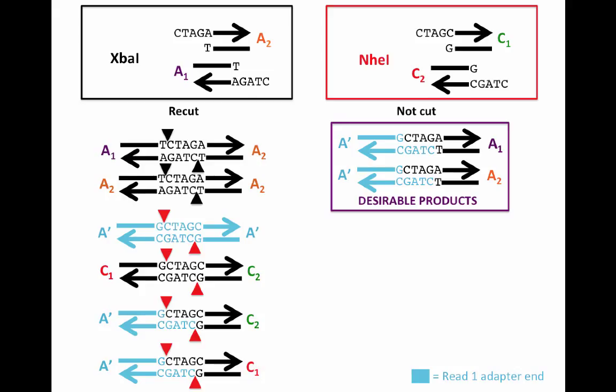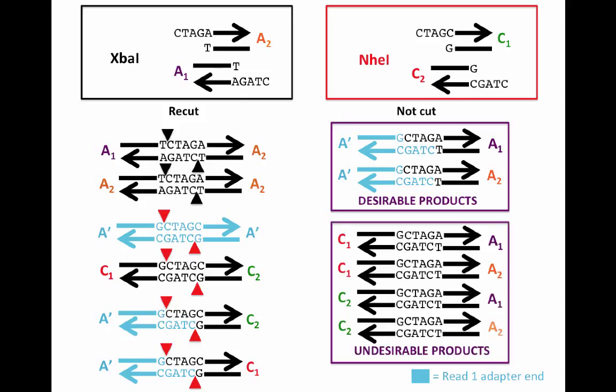It is important to note, however, that there are undesired chimeric products formed between the A and C molecules that cannot be recut. These undesired products can and do occur, but they are at a low frequency in the final library because it is necessary to have correct READ-1 and READ-2 sites upstream and downstream from these chimeric sites, and we use an excess of adapters which favors the formation of correct products.